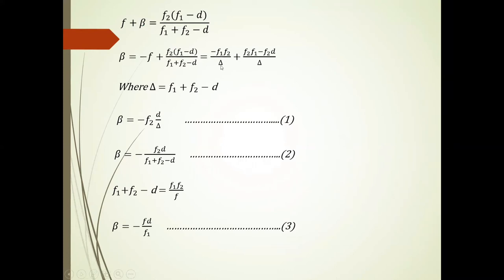So beta is equal to minus F2 into D upon delta. Equation first.